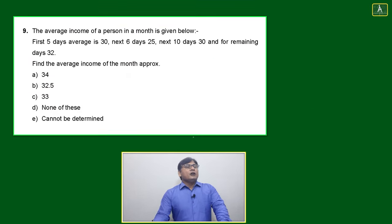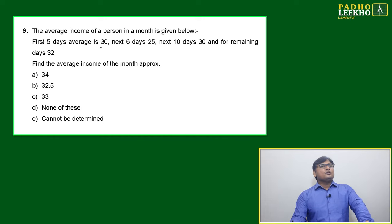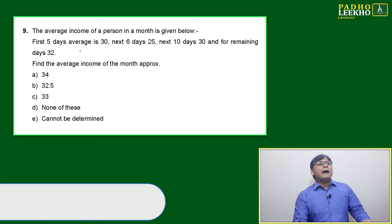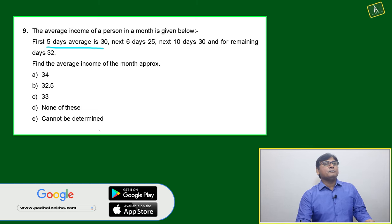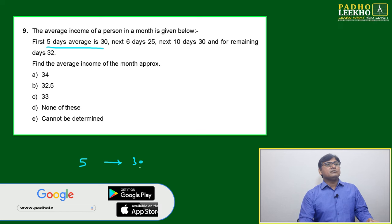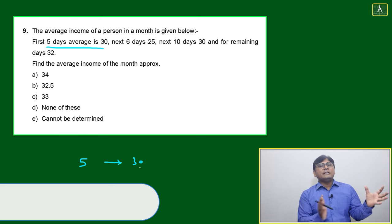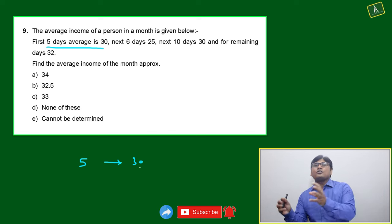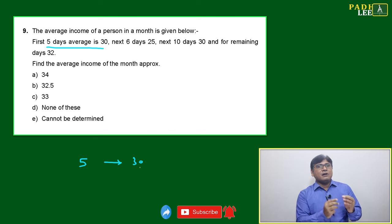Now we'll come to the next question, which looks like another weighted average problem. The average income of a person in a month is given below. First five days average is 30. The 30 or 31 days, or whatever number of days in a month, are split into small groups.